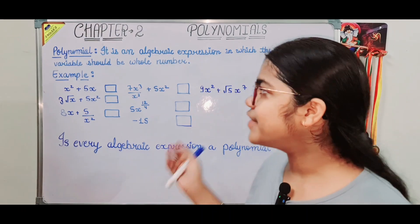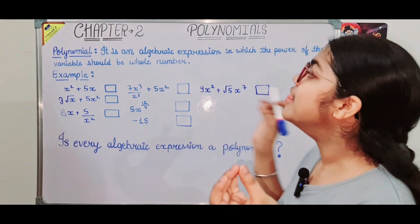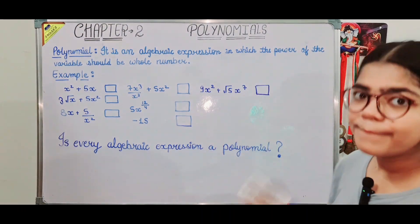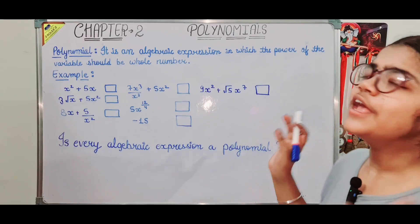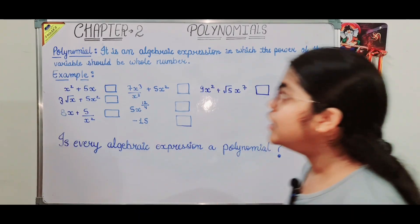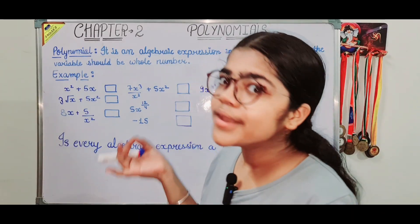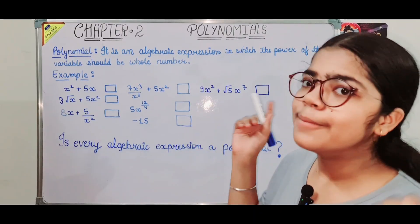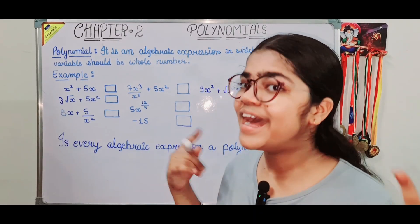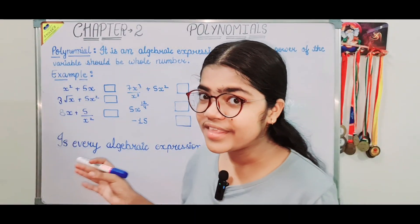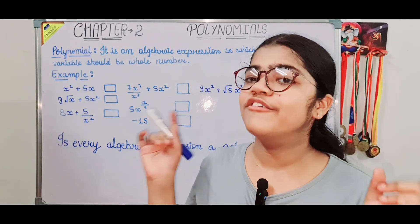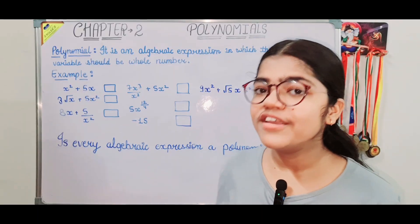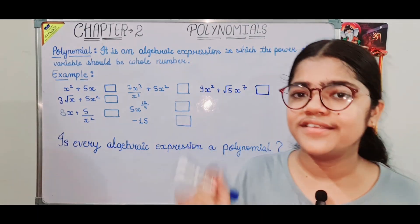Now, what are polynomials? A polynomial is an algebraic expression in which the power of the variable should be a whole number. An algebraic expression is a combination of a variable and a constant connected together with operators.